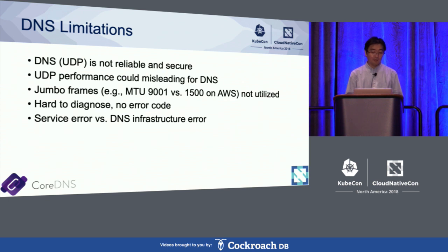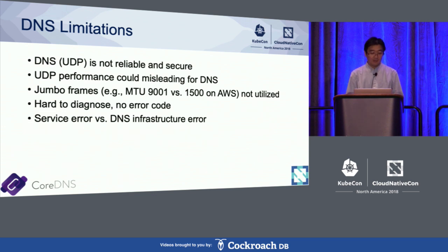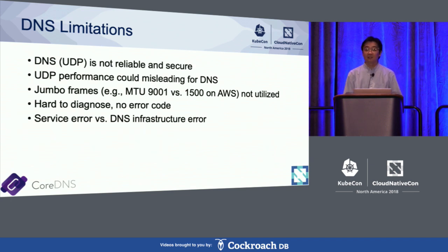With such a small packet size, a lot of CPU cycles are actually wasted on soft IRQ interrupts. The situation is even worse when jumbo frames are enabled. For example, on AWS, the default MTU is 9001, which is much larger than the 1,500 you normally see. Another issue with DNS is that it's very hard to diagnose because typically there is no error code. You also see service errors and DNS infrastructure errors, and it's hard to distinguish them.